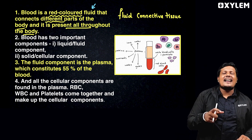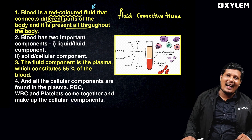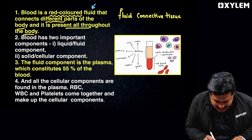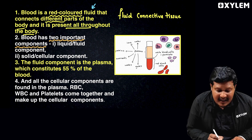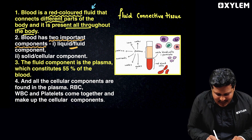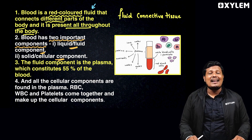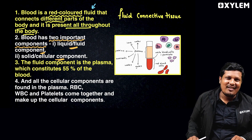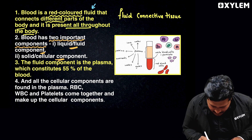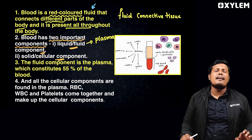So, what are the components of blood? Blood has two important components. One is the liquid or fluid component, and two is the solid or cellular component. The fluid component of blood is called plasma. Plasma is the fluid component of blood.